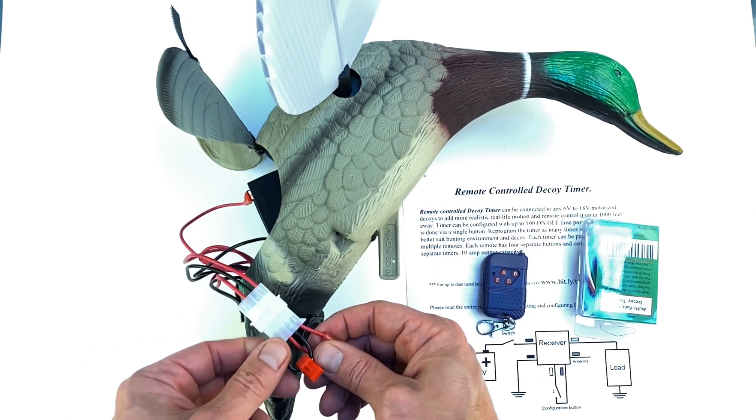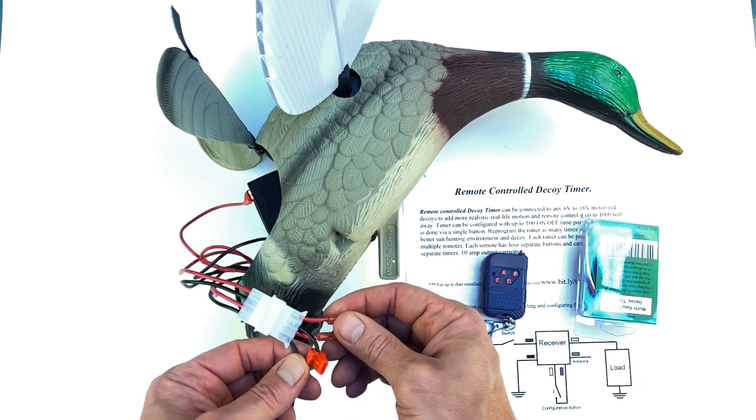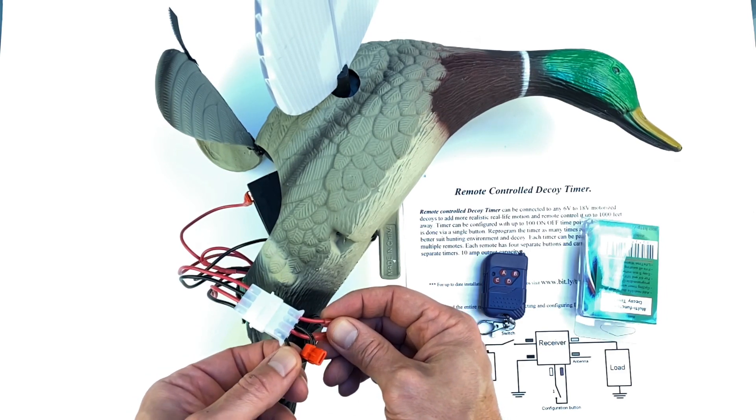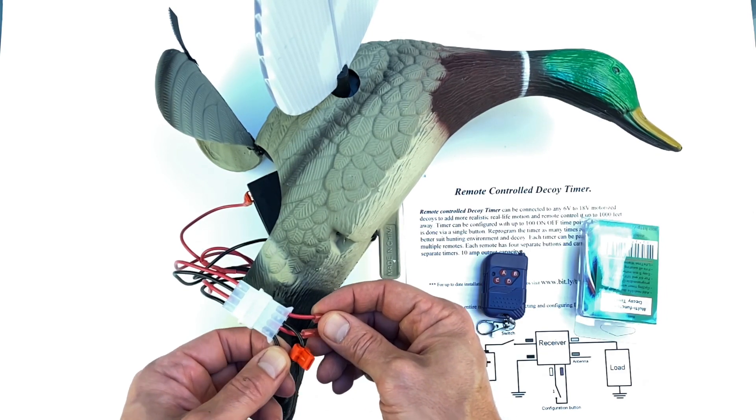Babymojo has a plug with two loops. There's a red loop and there's a black loop. The black loop is the ground and the red loop is the power.